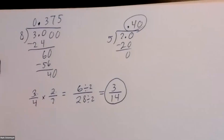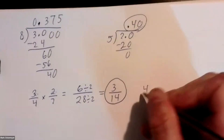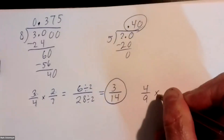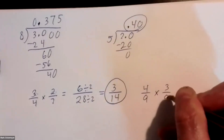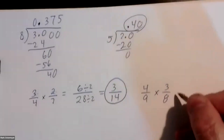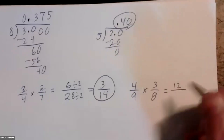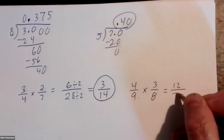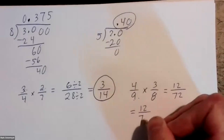All right, what's the next one? Four ninths times three eighths. Four over nine times three over eight. Yes, four times three is twelve, nine times eight is seventy-two. Then we reduce it — we divide by two. Can we reduce this by two? Yes, take it down to six over...